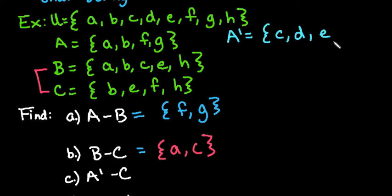and then H. So C, D, E, and H are the letters in the universal set that are not in set A.